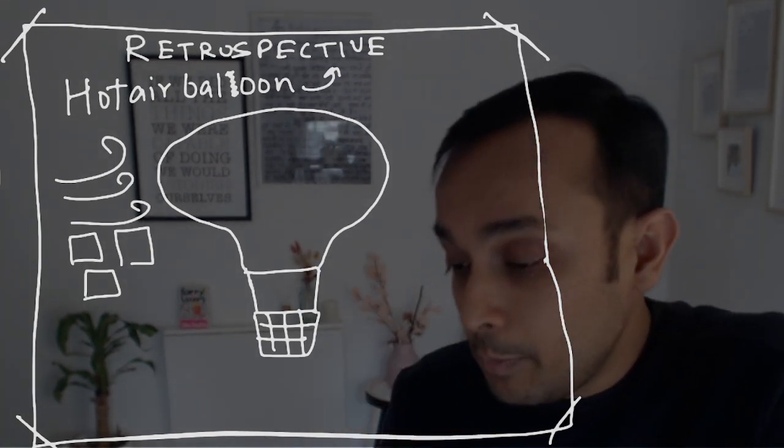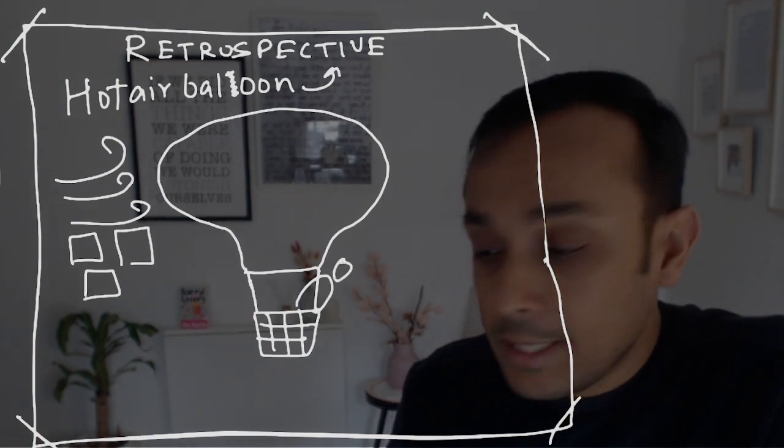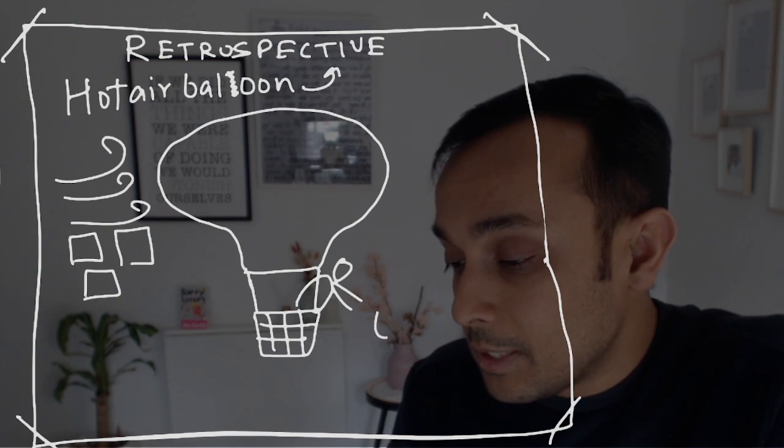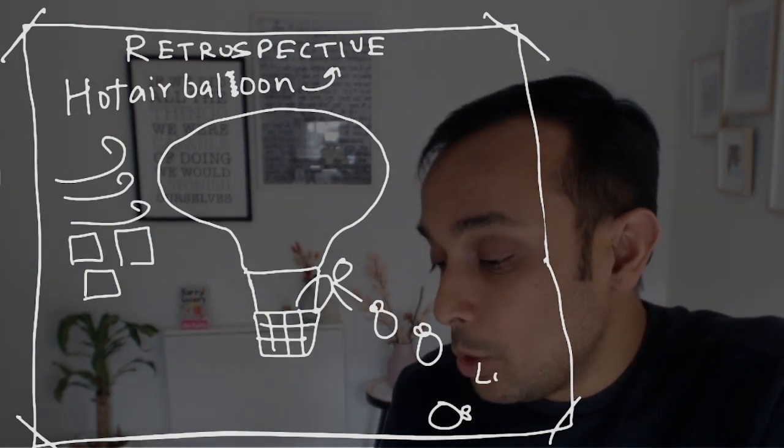The other one is the negative, what they could have done better. In this hot air balloon we draw a person like this and he is just throwing this unnecessary load on the ground. This is unnecessary load, which means here you will write what didn't go well.